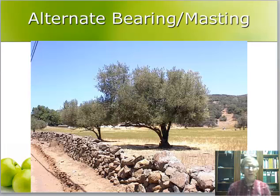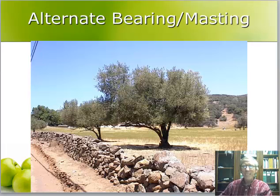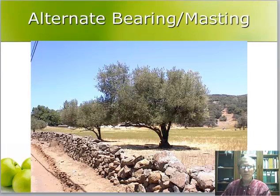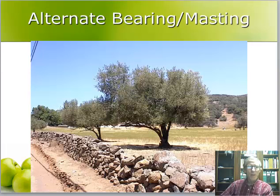Alternate bearing or irregular bearing occurs in many fruit and nut species as well as many forest species such as oaks shown in this picture. From recent research, it seems that alternate bearing tendency is a genetic trait, but sugar levels in the plant as well as external stimuli such as extremely cold or hot weather during flowering or fruit set can also influence it. Alternate bearing might be controlled by the perception of a few parallel and independent pathways.